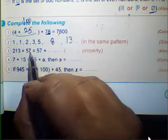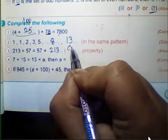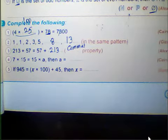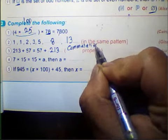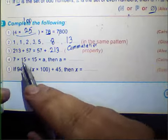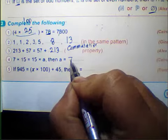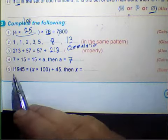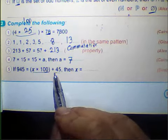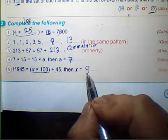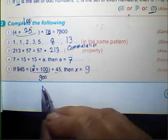213 plus 57 equals 57 plus 213, using the commutative property. 7 times 15 equals 15 times 7, using commutative property. If 945 equals x multiplied by 100 plus 45, then x equals 9, because 9 multiplied by 100 equals 900, and 900 plus 45 equals 945.